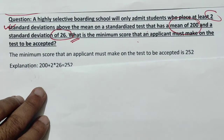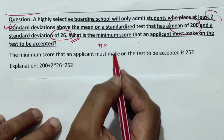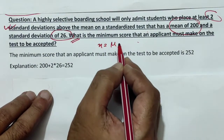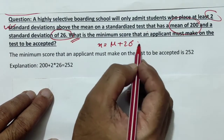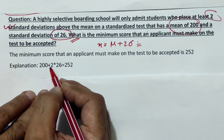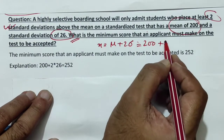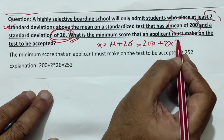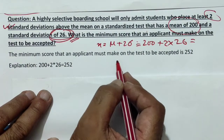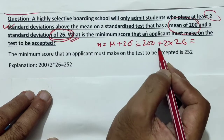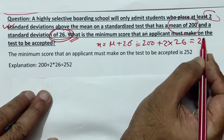What is the minimum? The minimum accepted formula is x equals mu plus 2 sigma, where sigma means standard deviation. So the minimum equals 200 plus 2 times sigma, where sigma equals 26. We get the minimum score that must be accepted as 252.